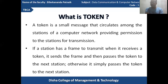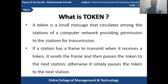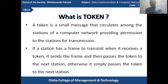If a station has a frame to transmit and it receives a token, it sends the frame and then passes the token to the next station. Station 1 can pass the token to the nearby station 2, and otherwise it simply passes the token along. If the token contains a frame or data, it passes from one station to another. If it does not contain any data — that is an empty token — it passes to the next station as an empty token.